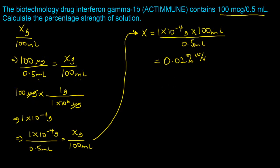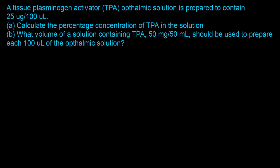The second question sent by the same viewer states: a tissue plasminogen activator (TPA) ophthalmic solution is prepared to contain 25 micrograms in 100 microliters. Part A asks for the percentage concentration of TPA in the solution. Part B asks what volume of a solution containing TPA at 50 milligrams per 50 milliliters should be used to prepare each 100 microliters of the ophthalmic solution.